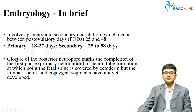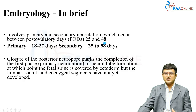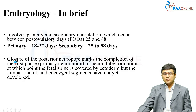Primary neurulation happens between 18 to 27 days, whereas secondary neurulation happens between 25 to 58 days. Both processes together take place between 25 to 48 to 58 days in total. Closure of the posterior neuropore marks the end of primary neurulation.